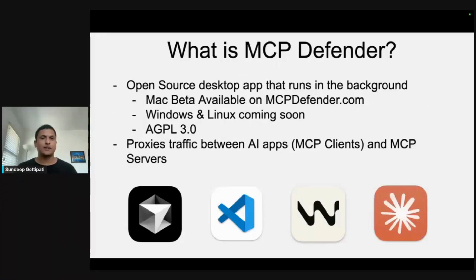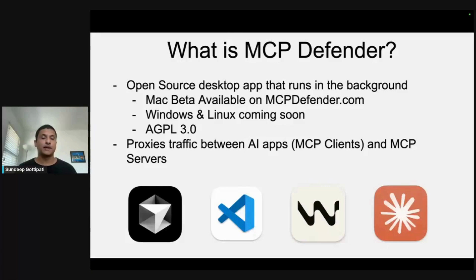So what is MCP Defender? It's an open source desktop app that runs in the background and proxies and scans traffic between AI apps and MCP servers. The four apps we support today are Cursor, Visual Studio Code, Windsurf, and Claude. Right now we're available as a beta on Mac — you can download it on mcpdefender.com. Windows and Linux apps are coming soon, and we're open source under the AGPL 3.0 license, so you can find us on GitHub.